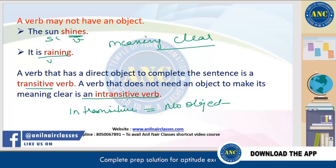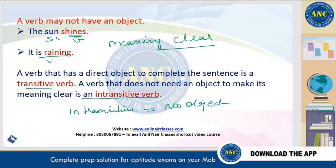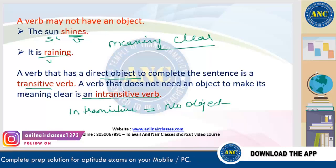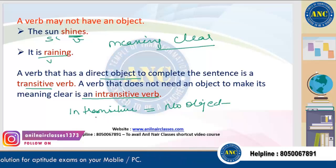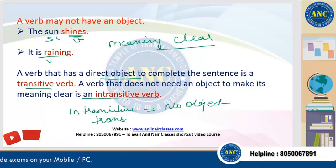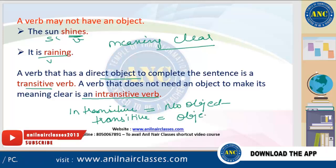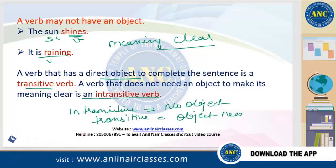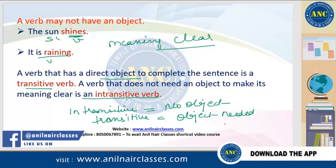A transitive verb is a verb that will have an object. It will definitely need a direct object to convey its meaning. So transitive will have the object — the object is needed and will always be there.